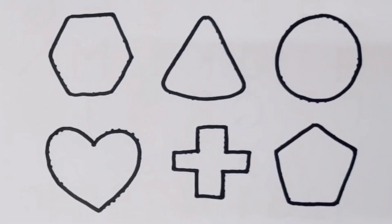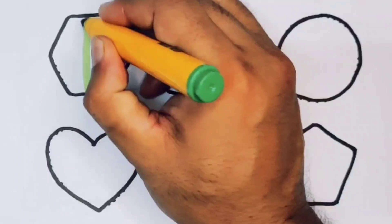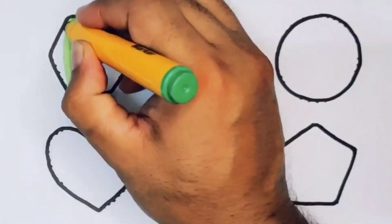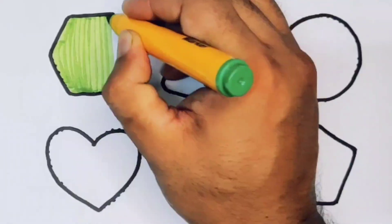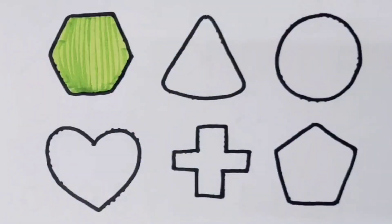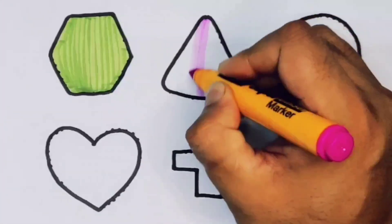Now we are going to put the color. Green color hexagon, pink color triangle.